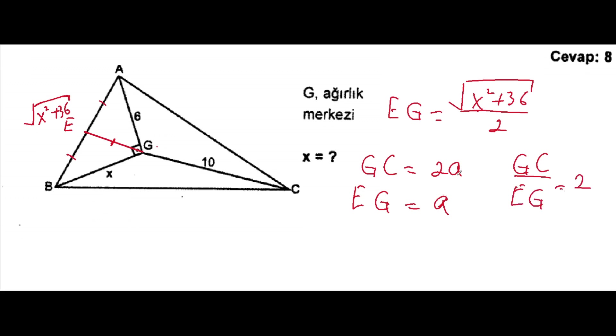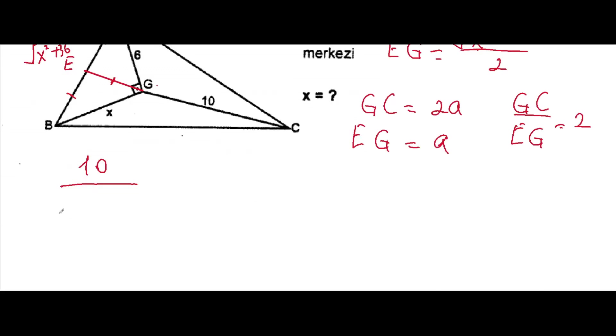So GC, we have 10, 10 over EG is the square root of x squared plus 36, here if you write down 36 over 2 will be equal to 2.